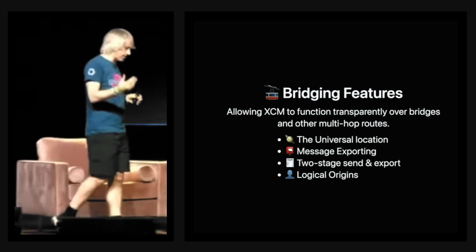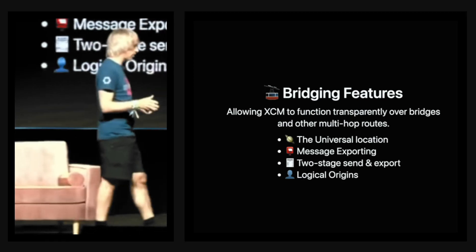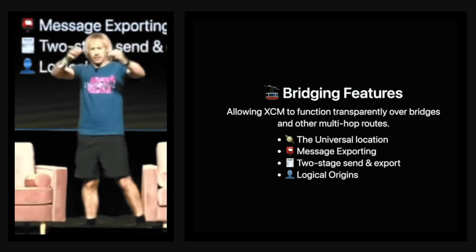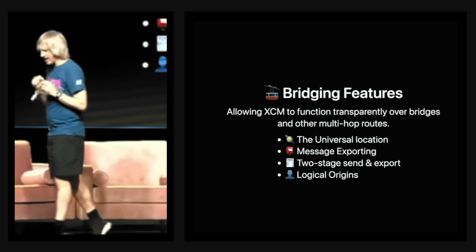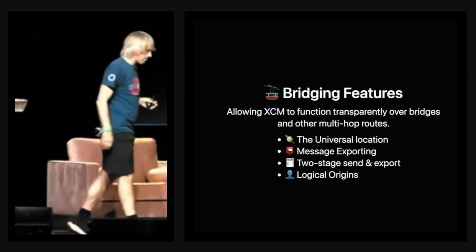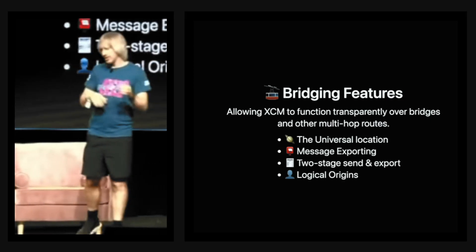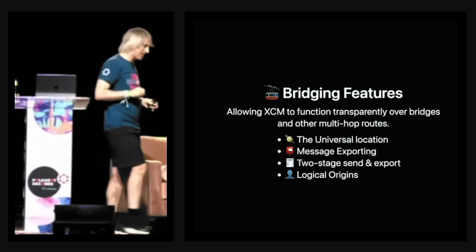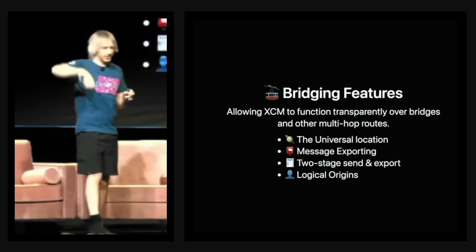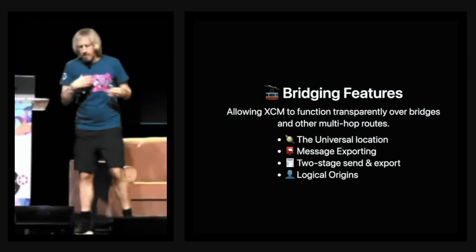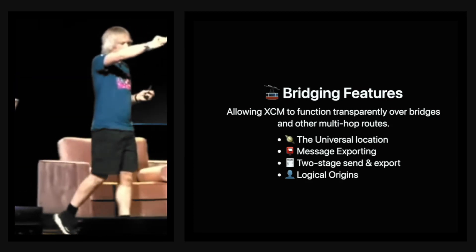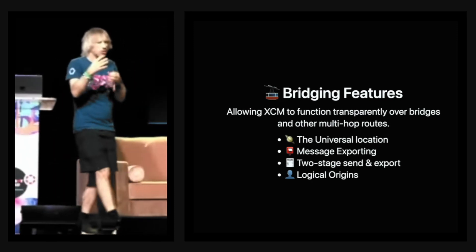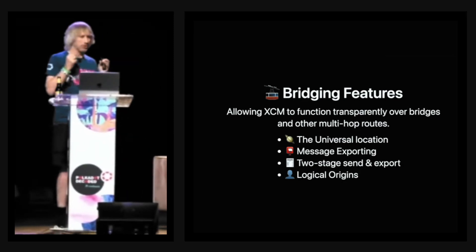XCM has an abstraction called a multi-location. Multi-location is basically a location held in consensus. An example might be the Polkadot relay chain, a specific smart contract that exists on Moonbeam, or a user account that exists on Statemint — these are all locations held in consensus. This becomes quite easy to think about in terms of directory hierarchies when dealing with parent and child relationships between relay chains and parachains.